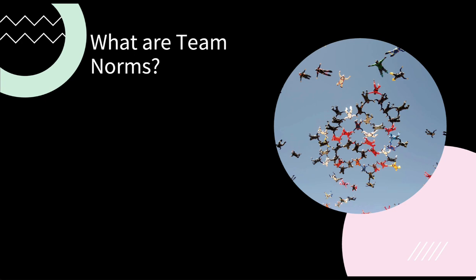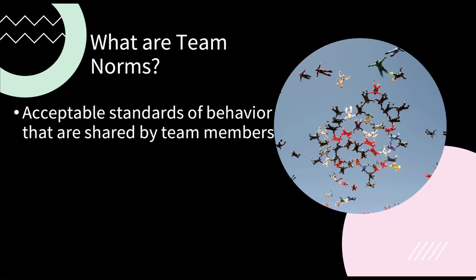Let's get some definitions out of the way. What are team norms? They are the acceptable standards of behavior that are shared by team members. It's really just what we do — it becomes normal. I want to talk about A&M as we go through this, because if we have anything, we've got some organizational culture. There are a lot of things we do that are just normalized — if you walked into Texas A&M, you might think these people are nuts, but it's our norm. It's just what we do.